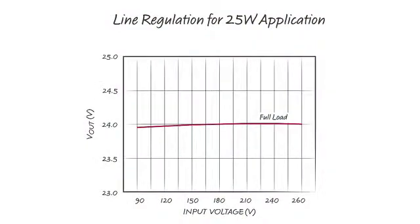This plot shows typical line regulation results for a 25 watt application with voltage regulation. Over the 90 volt to 260 volt universal input range, regulation is better than 0.5%.